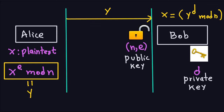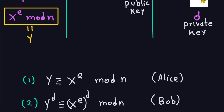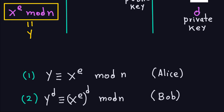For the proof, what Alice does is X to the E modulo N. I'm going to use congruence. Remember, congruence here means that these two numbers, Y and X to the E, leave the same remainder when you divide by N. Another way to see it is that N divides the difference Y minus X to the E. So Y equals this means that Y is congruent to X to the E modulo N. This is what Alice does.